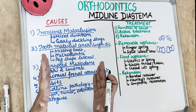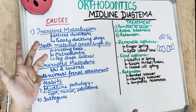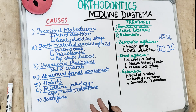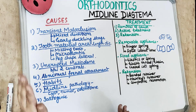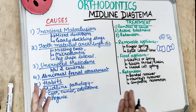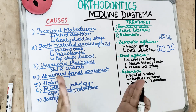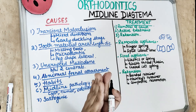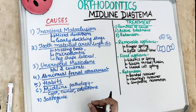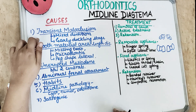Sometimes midline diastema is actually normal. Spacing present in the deciduous teeth is normal and helps in accommodating the larger permanent teeth. Spacing present in the mixed dentition period is the early duckling stage, when the permanent canines are erupting. They put pressure on the roots of the lateral incisors mesially, causing the roots of the central incisors to get displaced mesially, creating a space between the two central incisors. This midline spacing is self-correcting and transient.